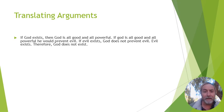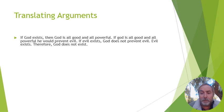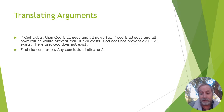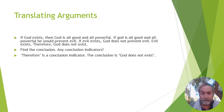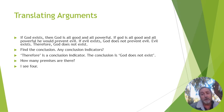The argument goes like this: If God exists, then God is all good and all powerful — that's just the definition of God. If God is all good and all powerful, he would prevent evil. If evil exists, then God does not prevent evil. Evil does exist. Therefore, God does not exist. First, we want to find the conclusion. Do we have any conclusion indicators? Yes — 'therefore' is a conclusion indicator. So the conclusion must be 'God does not exist,' meaning everything else is a premise. I see four premises.